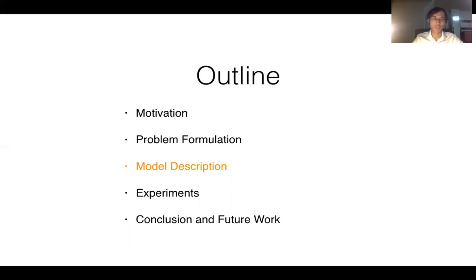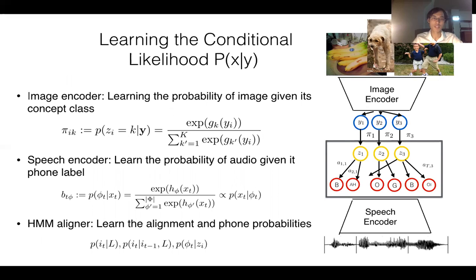Now we are ready to describe our model. To learn the conditional likelihood, we break the probability into three components. The image encoder learns the probability of the image given its concept class, which is assumed to be in the form of a softmax function with a nonlinear kernel. The speech encoder has the same form as the image encoder but with a different kernel function across different phone labels. Although this is a posterior probability, it is proportional to the likelihood of the acoustic features given phones. Finally, we need an HMM aligner to learn the alignment and phone probabilities given the concepts.